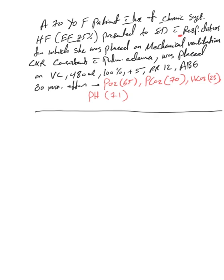Chest x-ray was consistent with pulmonary edema. She was placed on volume control, tidal volume 480 ml, 100% FiO2, PEEP 5, respiratory rate 12, and ABG showed the PO2 was 65, PCO2 70, bicarb 23, and pH 7.1.